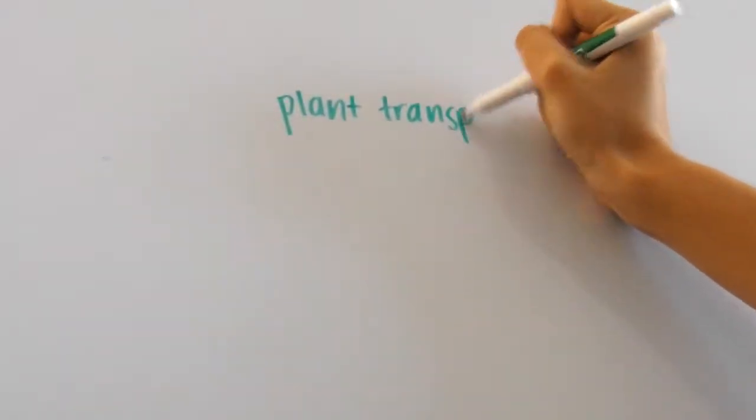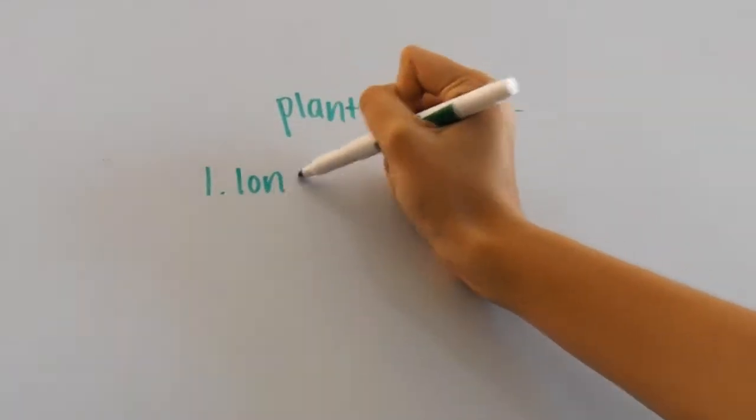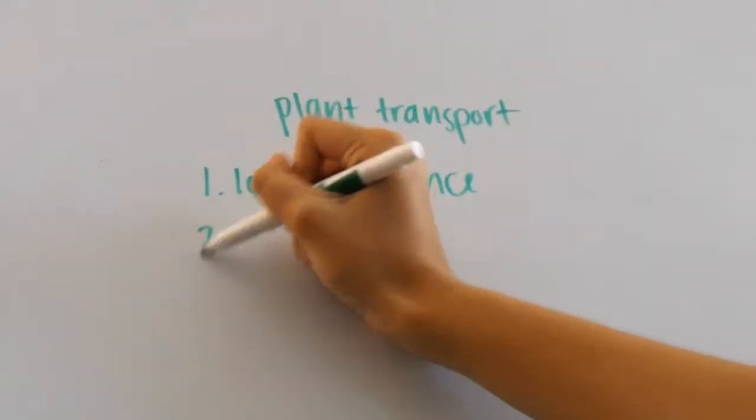Hey everyone! Today I'm going to go over the different types of transport in plants, and scientists have mainly divided transport into two types, long distance and short distance.